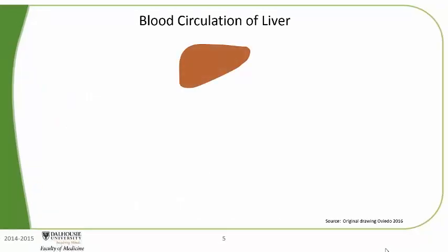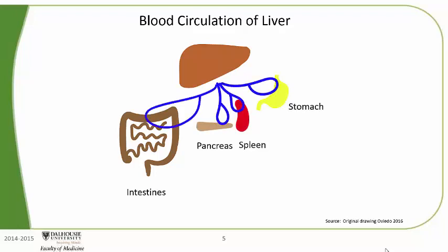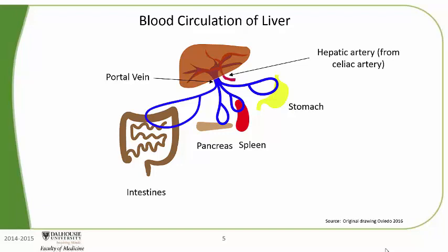Here is the liver. The liver receives venous blood from the intestines, pancreas, spleen, and stomach. These blue lines represent venous blood draining these organs. This venous blood enters the liver through the portal vein. The liver also receives arterial blood from the hepatic artery, which branches from the celiac artery. Blood leaves the liver through the hepatic veins, which enter the inferior vena cava.